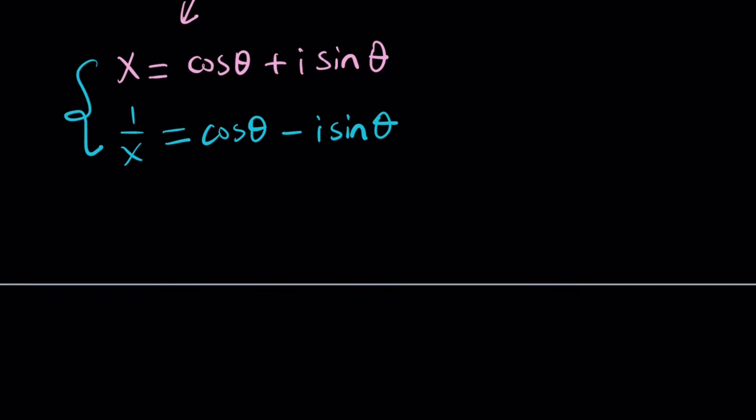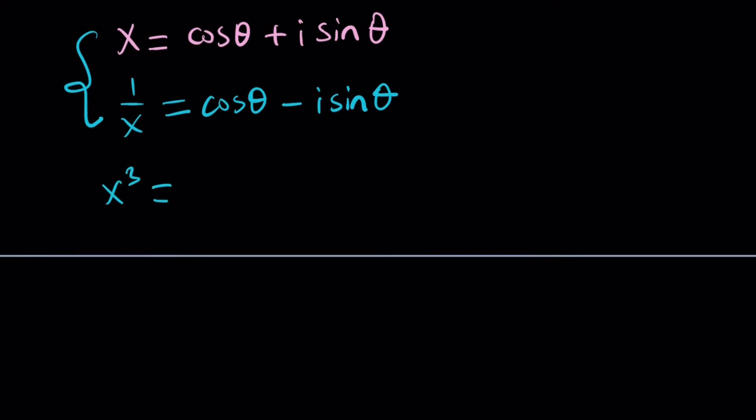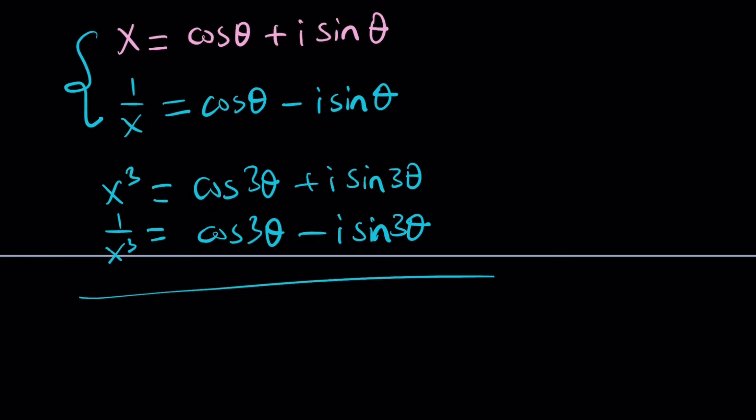Now, we're going to cube them. So x cubed is going to be cosine of the Moivre's formula. That's how I can say it. Cosine 3 theta plus i sine 3 theta. So all you have to do is triple the argument, which is theta, and that's all you have to do. And then 1 over x cubed is going to be similar. It's going to be a minus sign, of course, because that's the conjugate. So if you cube the conjugate, you get the conjugate of the cube.